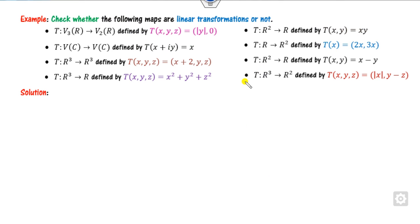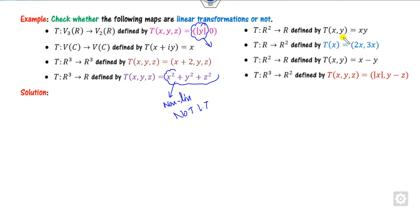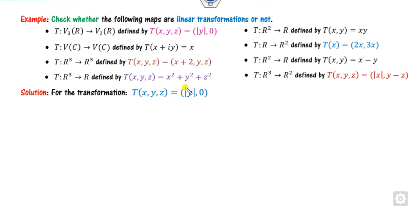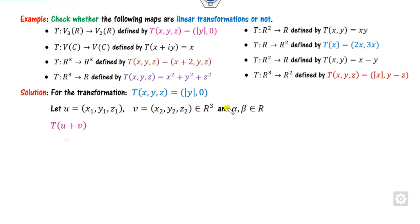Now consider whether this next function is linear or not. Clearly this function is non-linear, so it is not a linear transformation — you must provide one counter example. Similarly, mod x is non-linear, hence not a linear transformation. Also, a function with degree 2 in x and y means it is not a linear transformation.